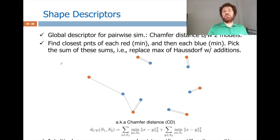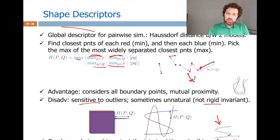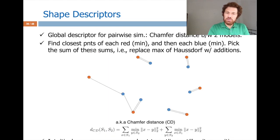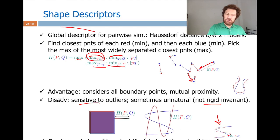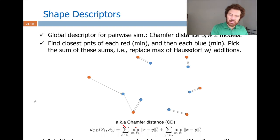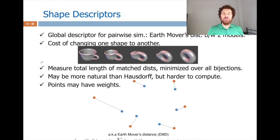Chamfer distance is similar to Hausdorff but instead of taking the maximum of the minimum distances, you sum them. Sum the closest minimum distances from red to blue and from blue to red. This is expected to be less sensitive to outliers than Hausdorff, but in practice it still has outlier sensitivity issues.